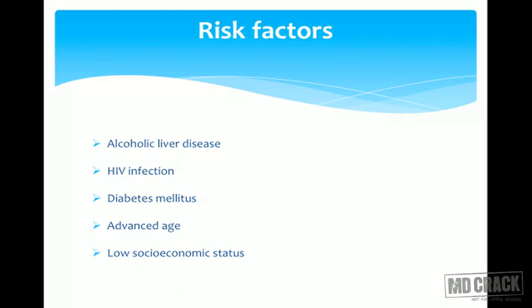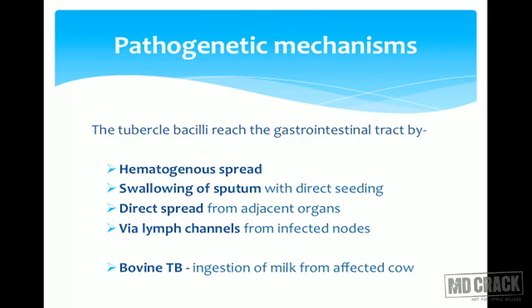Patients at high risk for abdominal tuberculosis include those with HIV infection, alcoholic liver disease, diabetes mellitus, advanced age, or low socioeconomic status. The tubercle bacilli reach the GI tract most commonly by hematogenous spread from seeding in the lung. Patients can also swallow infected sputum, causing direct seeding into the intestines. Spread can also occur from adjacent organs, via lymphatic channels, or by drinking unpasteurized bovine milk from an infected cow.